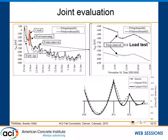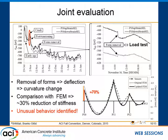We did exactly that. This is the diagram of the curvature change, which corresponds to the bending moment diagram. At the location of the joint, the gray line represents the original finite element model assuming good continuity, and the black line is fitted to the dashed line which are the measurements. We see a change — a roughly 30% reduction in stiffness at that specific location. Our conclusion is that we identified unusual behavior indicating the stiffness at the joint is not as expected, which is a consequence of the bridge being built in two phases.